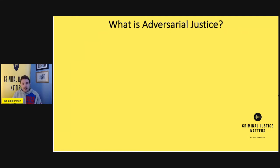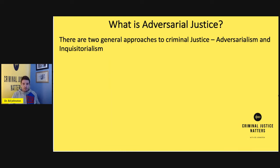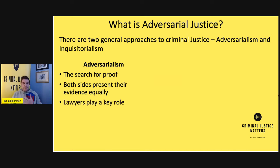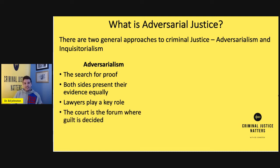I said it underpins adversarial justice, but what is adversarial justice? Well generally there are two approaches to criminal justice: adversarialism and inquisitorialism. Adversarialism is based on the search for proof — what can you prove about a particular allegation? Both sides present their evidence equally at trial. Lawyers play a fundamental role in the adversarial process. The court is the forum where guilt of the defendant is decided.